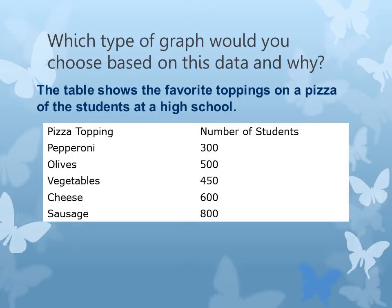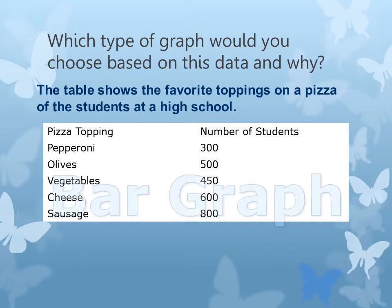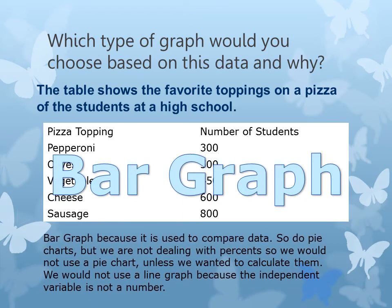Which type of graph would you choose based on this data, and why? The table shows the favorite toppings on a pizza of students in a high school — pizza topping and number of students. My answer would be a bar graph, because it's used to compare data. Pie charts compare too, but we're not dealing with percentages here. We could calculate a percent and do a pie chart, but using the data as is, we'd do a bar graph. We're not using a line graph because we're not seeing a relationship — we just want to see how many kids like pepperoni, cheese, or sausage.